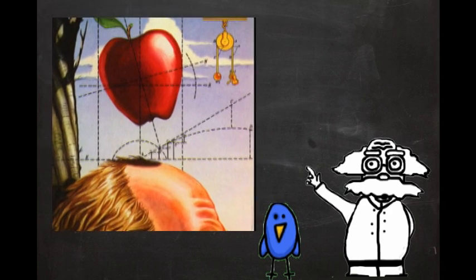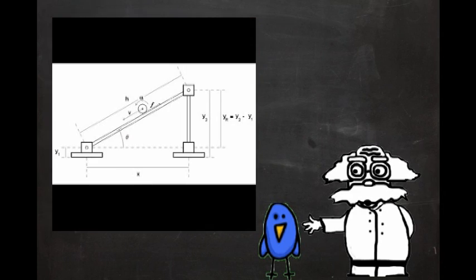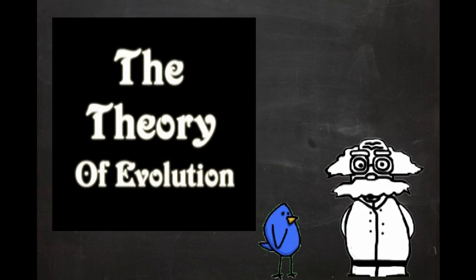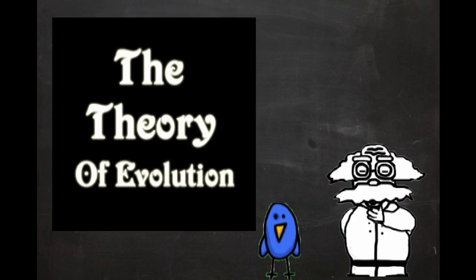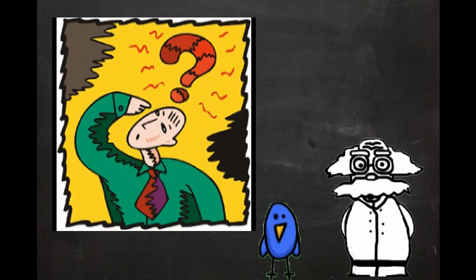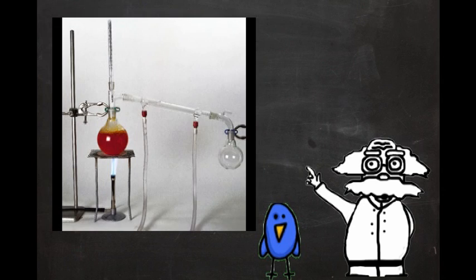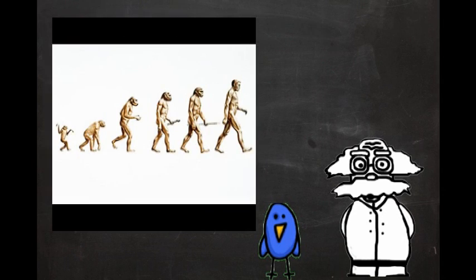Take gravity, for example. All of the current understanding on the way gravity works is called gravitational theory. When someone says the theory of evolution, they aren't referring to some vague guess as to the reason for the diversity of life on our planet, they are referring to the body of verifiable data, experiments, and evidence that explain the concept of evolution.